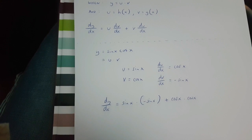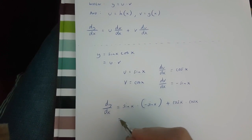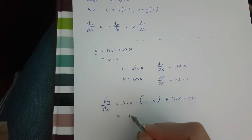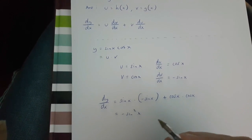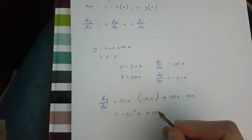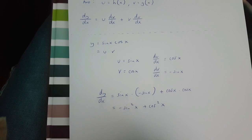Which means that dy over dx is equal to minus sine x squared, plus cos x squared.